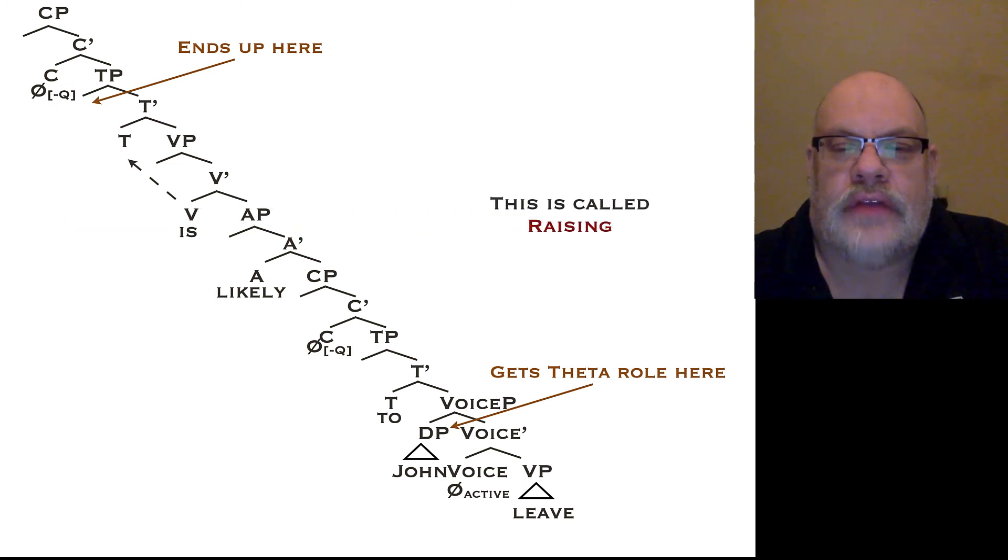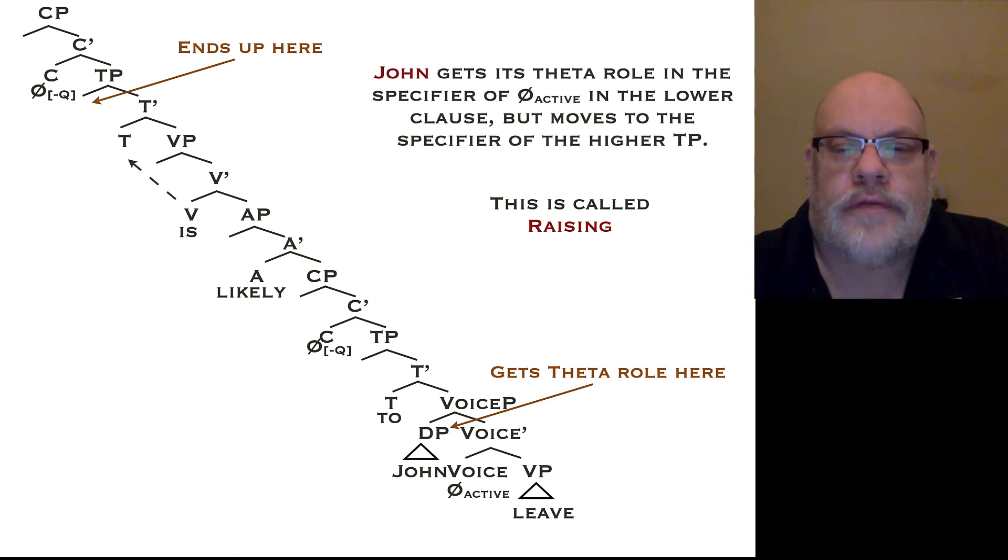So this operation, this movement from this lowest position up to that very high position is called raising because you're moving, you're raising the DP from one clause to another. Now we can indicate this with an arrow, just like we indicated head movement with an arrow. We just draw an arrow to indicate that it starts downstairs and it moves upstairs.